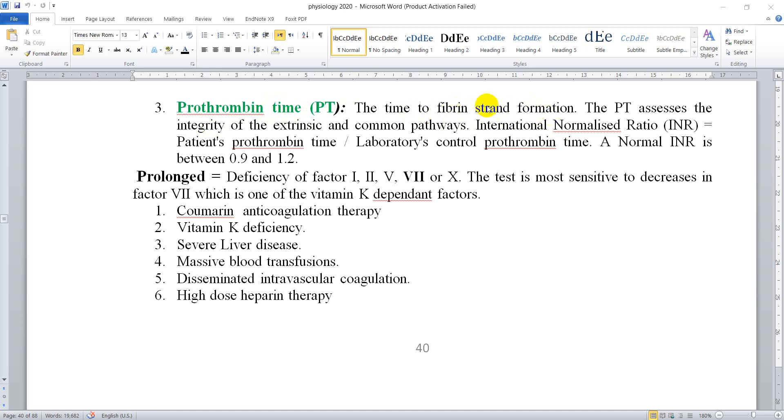It's also called clotting time. Prothrombin time or PT assesses the integrity of the extrinsic and common pathway. The International Normalized Ratio, or INR, is the patient's prothrombin time over the laboratory control prothrombin time.